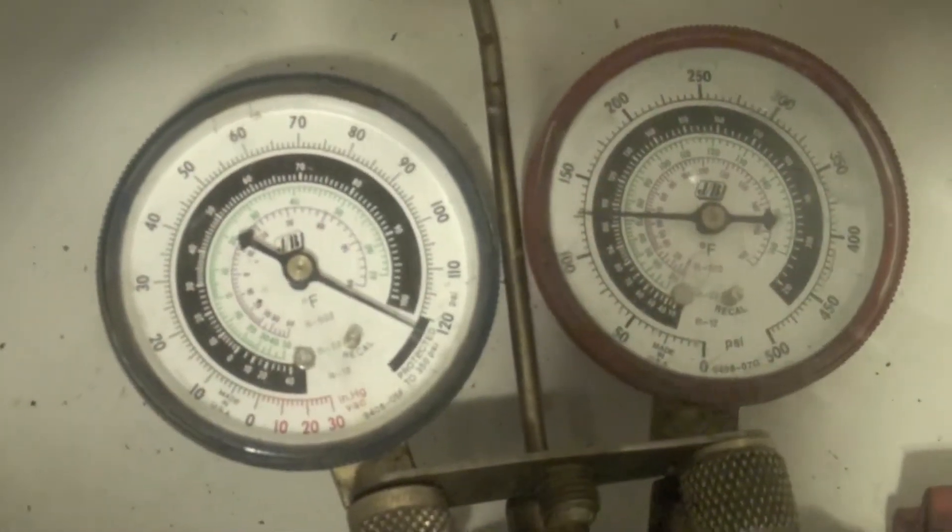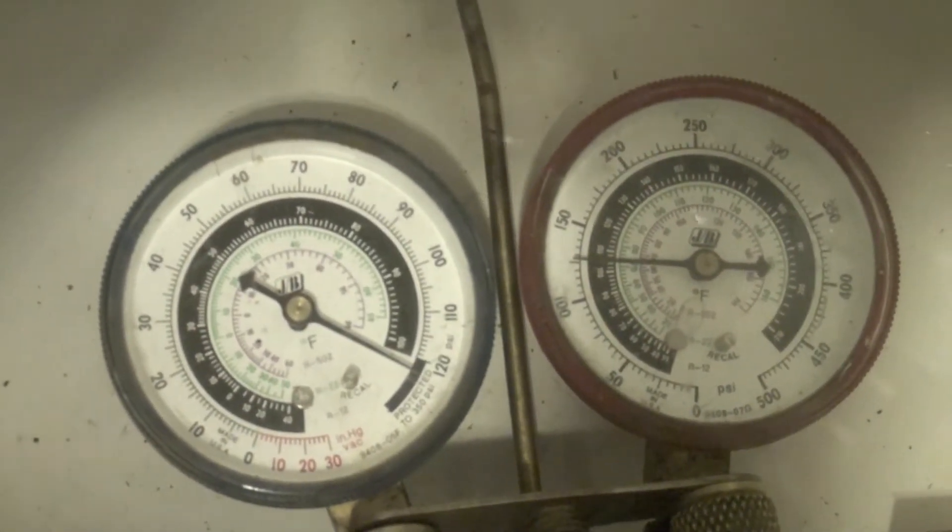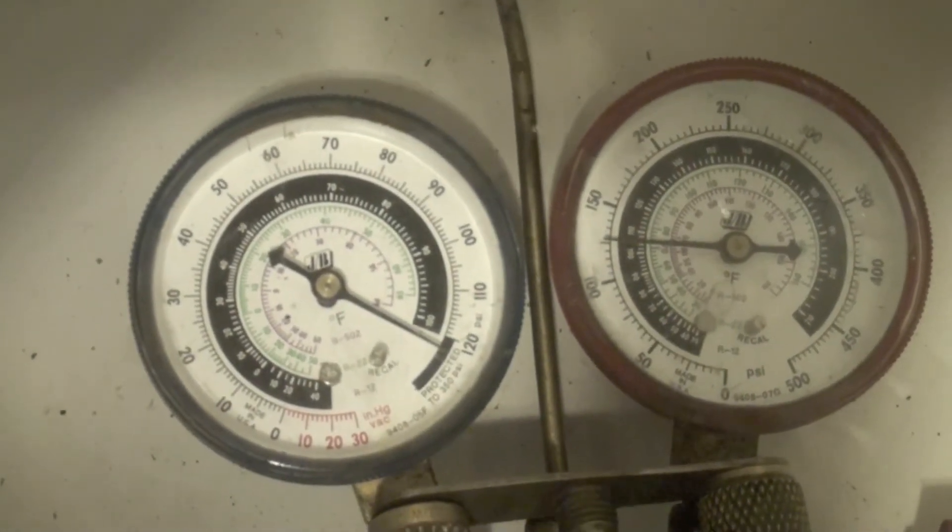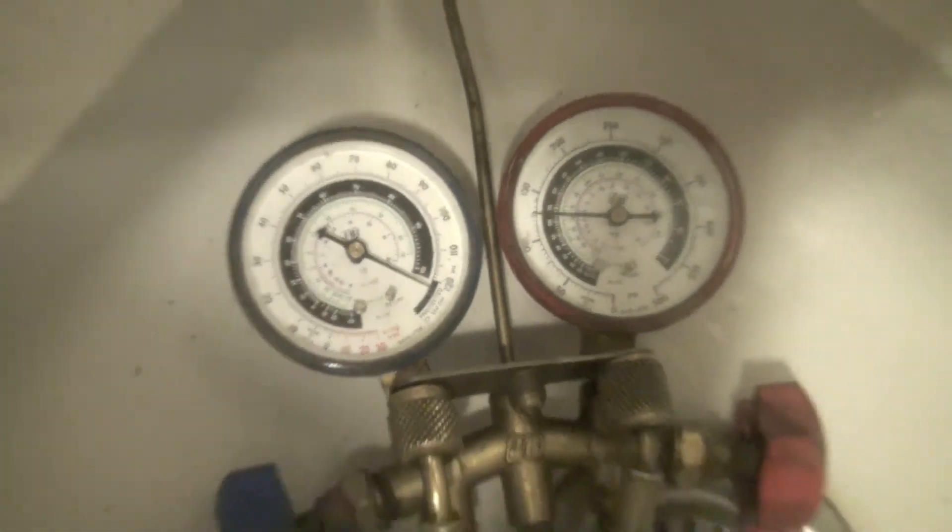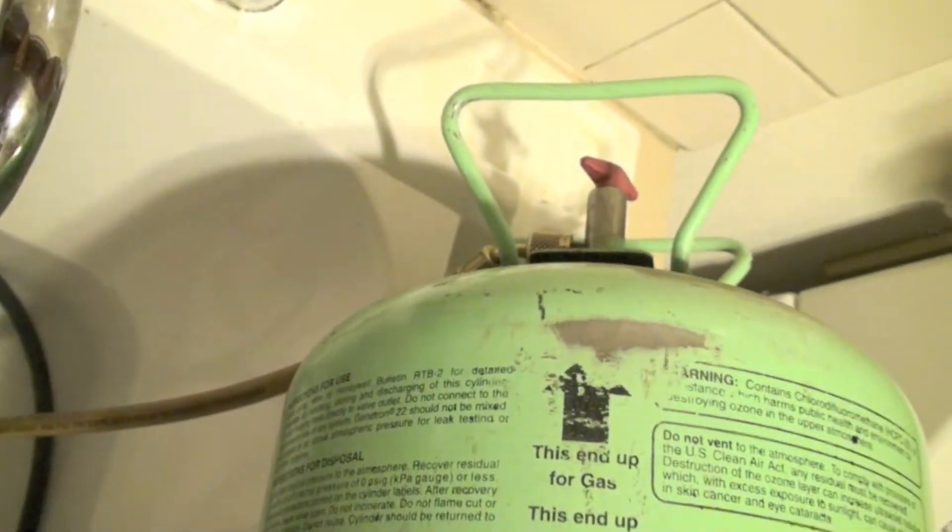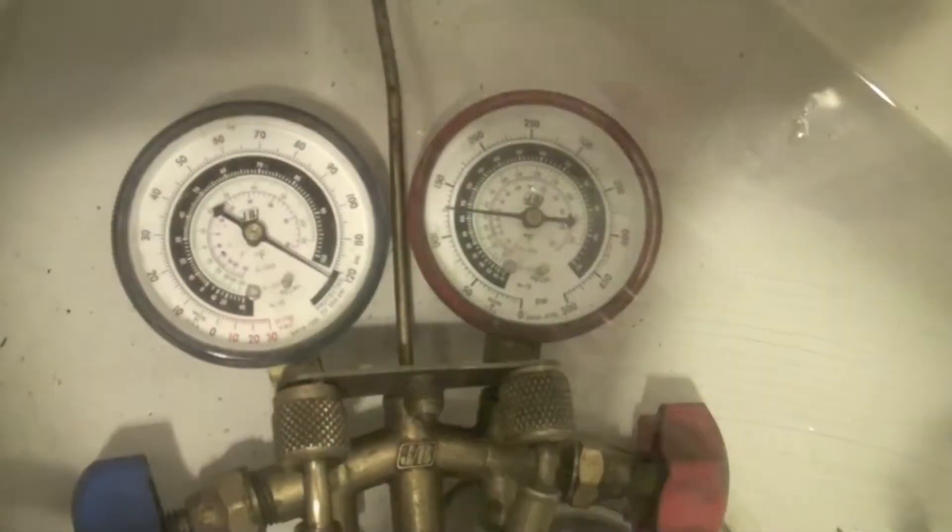Okay, that hose has got a leak. What I've done is, if you look here, the gauge set has pressure in it. That's simply because I have it hooked to a refrigerant cylinder. What we're doing here by putting these hoses in water is finding out if there are any leaks.